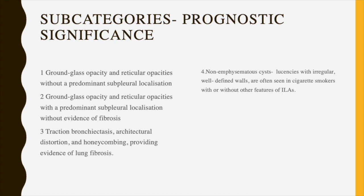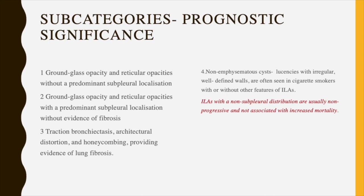Other findings that can be categorized as ILA include non-emphysematous cysts, which differ from honeycomb cysts in that they have a well-defined wall and are irregular. These are very commonly seen in cigarette smokers, carry a chance of progression, and are included in the definition of ILA.